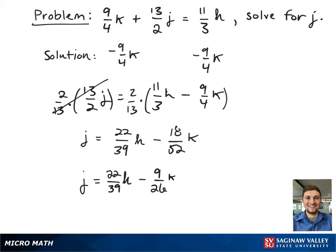Then we're going to simply reduce it to j = 22/39 h - 9/26 k, and that is our final answer.